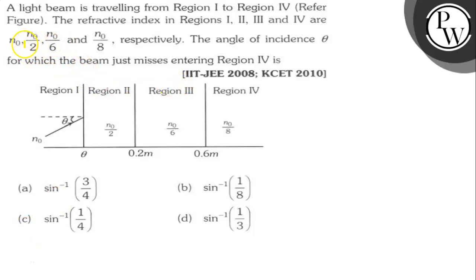Let's read the question. The question says here, a light beam is travelling from region 1 to region 4.